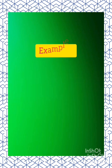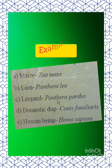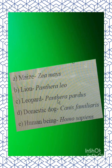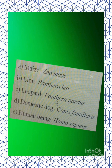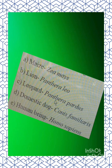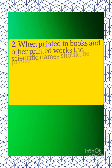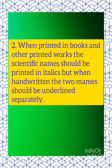Rule number two: when printed in books and other printed works, the scientific name should be printed in italics, but when handwritten, the two names should be underlined separately.